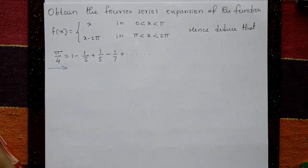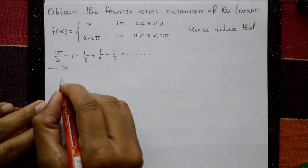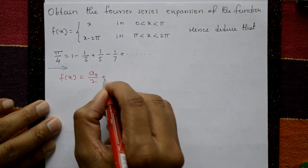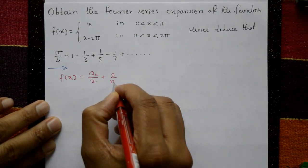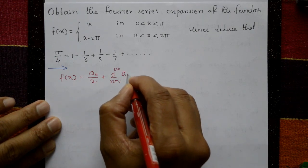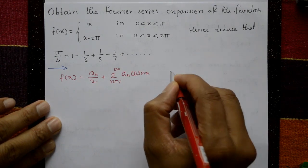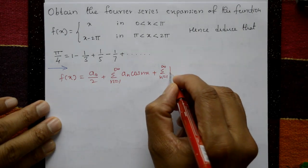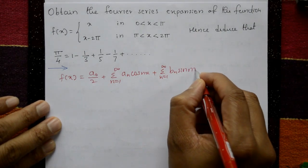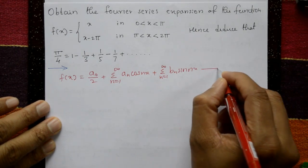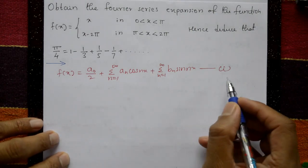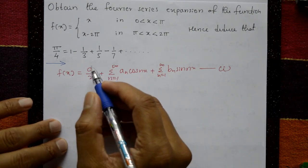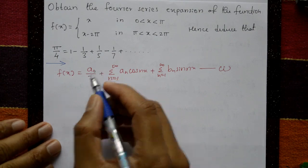Now, the Fourier series is f(x) = a0/2 plus summation from n=1 to infinity of an cos(nx), plus summation from n=1 to infinity of bn sin(nx). This is equation number 1 — the Fourier series. We need to find a0, an, and bn. First, check whether the function is even or odd.